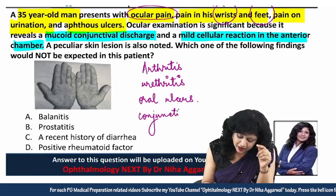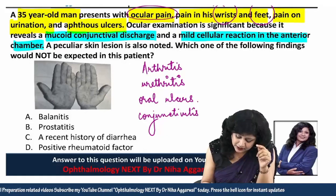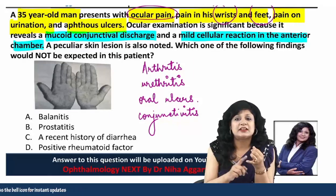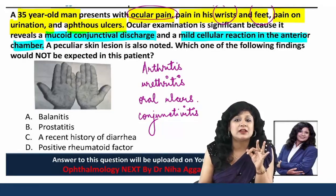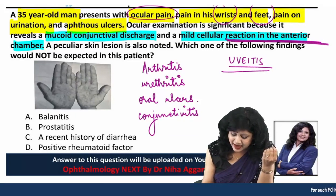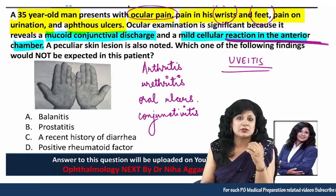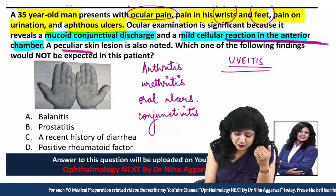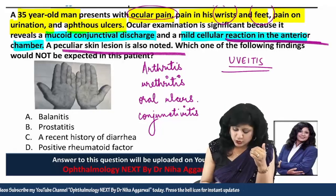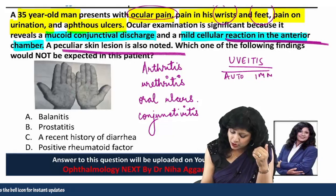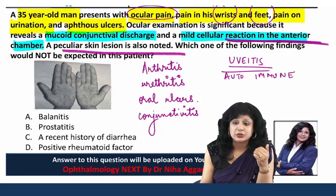The discharge in the conjunctiva clearly shows conjunctivitis. The diagnosis is becoming clearer — with arthritis, urethritis, oral ulcers, and conjunctivitis, it is obviously uveitis. They are specifically noting a reaction in the anterior chamber as well.